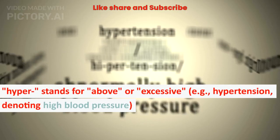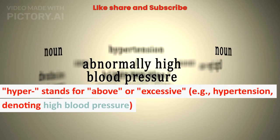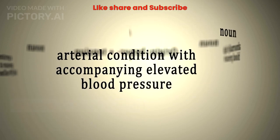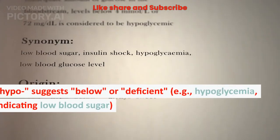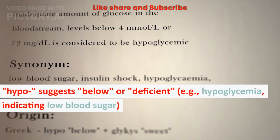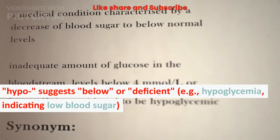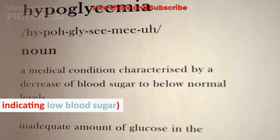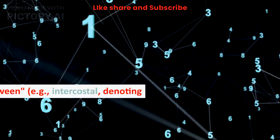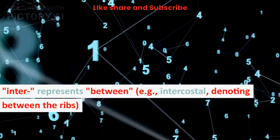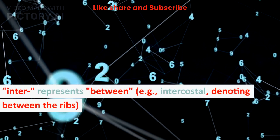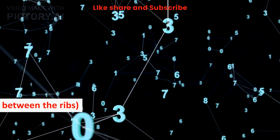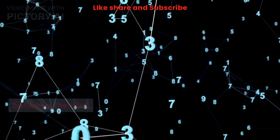Hyper, stands for 'above' or 'excessive,' e.g., hypertension, denoting high blood pressure. Hypo, suggests 'below' or 'deficient,' e.g., hypoglycemia, indicating low blood sugar. Inter, represents 'between,' e.g., intercostal, denoting between the ribs.